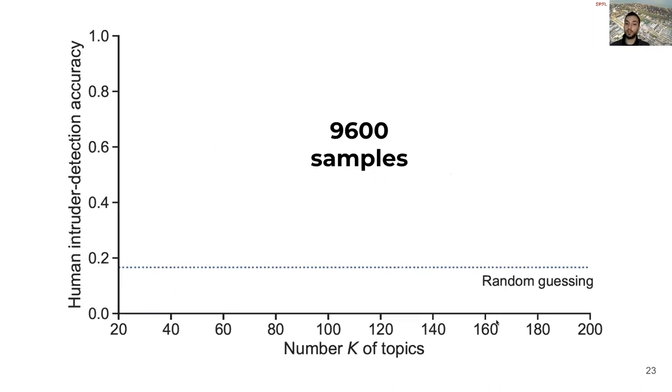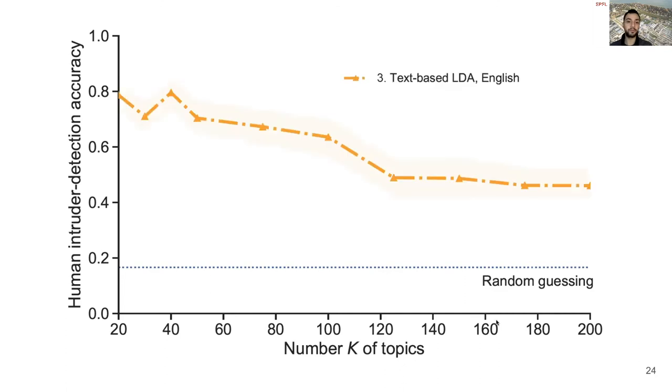We run this task on Mechanical Turk, and we collected 9600 answers to evaluate the quality of the topics of different models. In this plot, we presented the number of topics on the x-axis, and on the y-axis, the average of human accuracy in identifying the correct intruder for the specific model. The horizontal line represents the random guessing. Remember that since the user would guess an item in a list of six, the naive baseline is around 16%. But first, let's add a harder baseline.